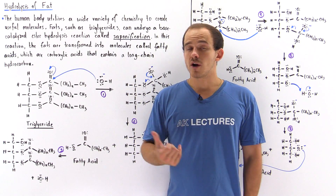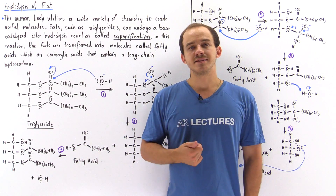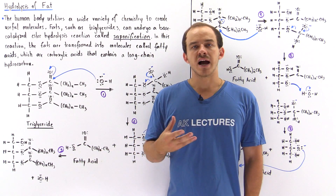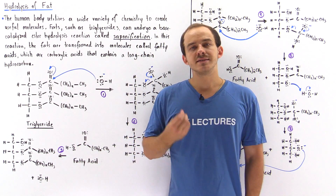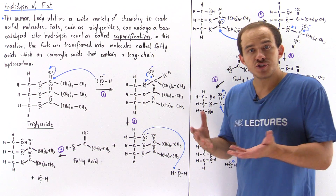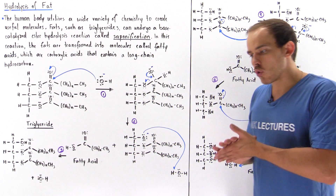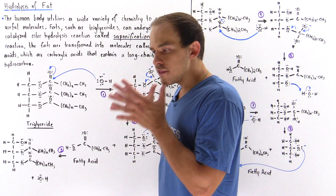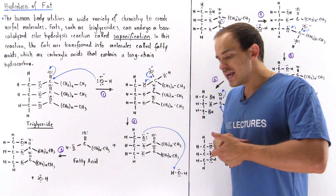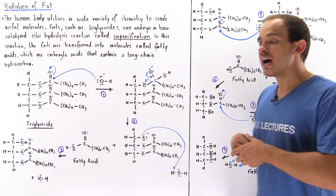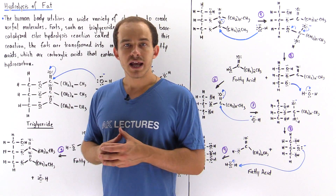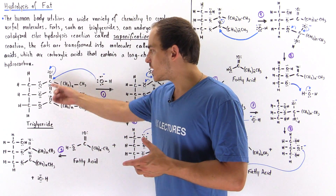Since we're on the subject of carboxylic acids and their reactions, let's discuss one particularly important type of application that exists in our body. When we ingest food, we ingest the fat that is stored within the cells of that food product — let's suppose some type of animal product. The most common type of fat that we ingest is a triglyceride.